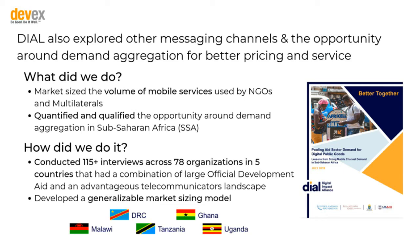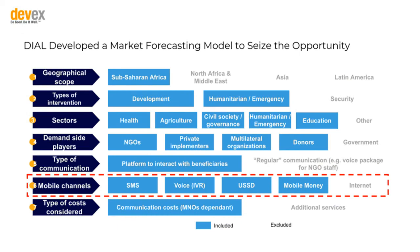We essentially went out and tried to size a market for mobile services in five countries: Malawi, DRC, Tanzania, Ghana, and Uganda. It was a pretty exhaustive interviewing and focus group effort across 78 organizations. From this, we developed a generalizable market sizing model. Essentially, we focused on sub-Saharan Africa, development, and humanitarian emergency response across health, agriculture, civil society, humanitarian, and education sectors. We did not include government use — it was really just donors, multilaterals, private implementers, and NGOs — and focused on the communication costs themselves across SMS, voice, USSD, and mobile money channels.